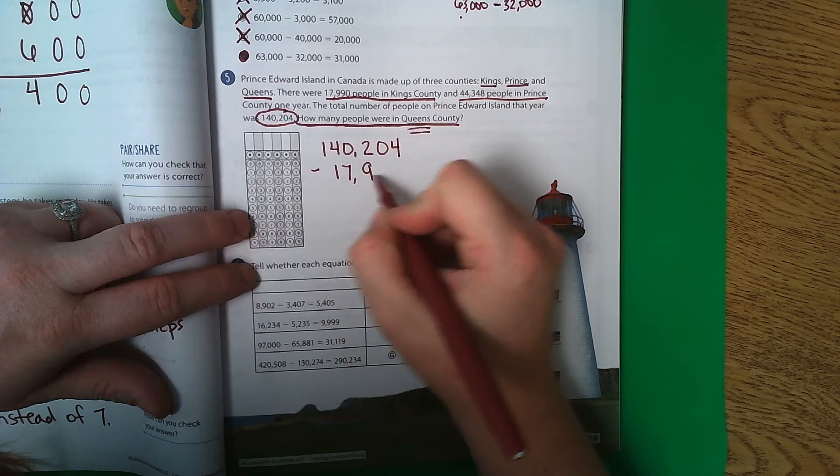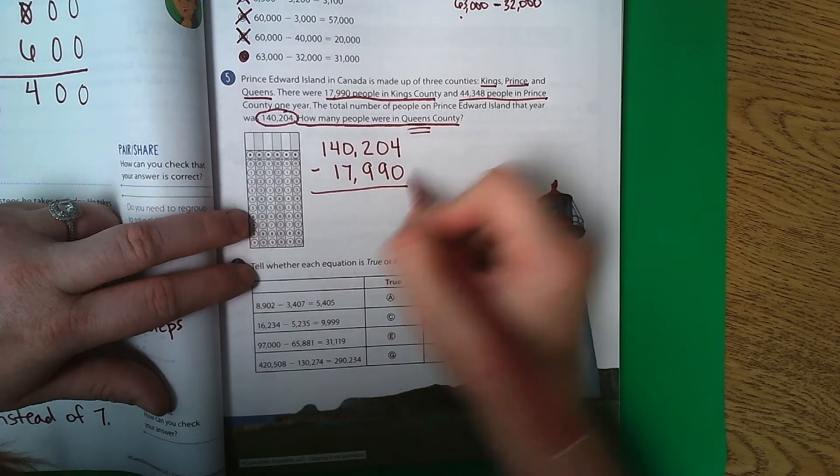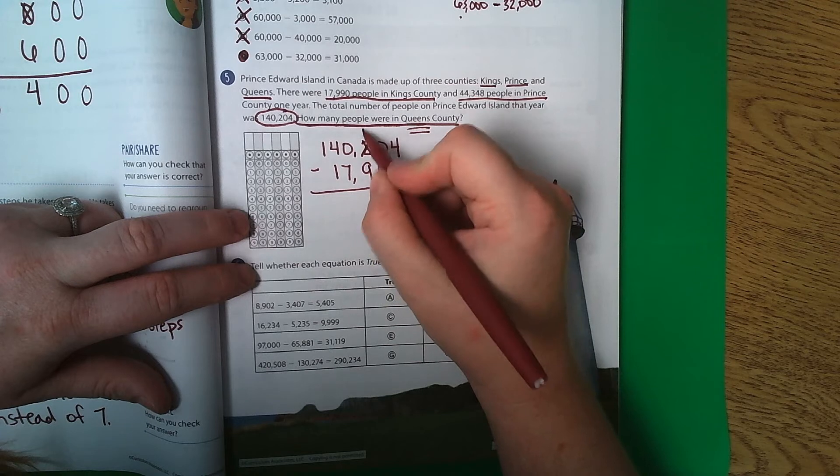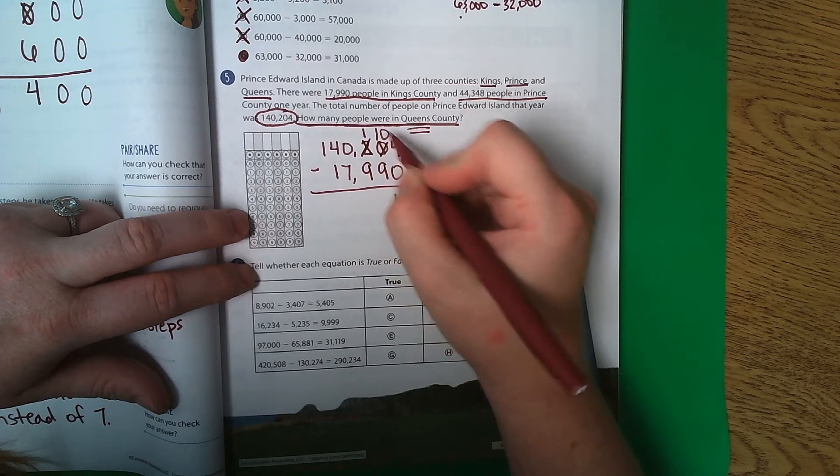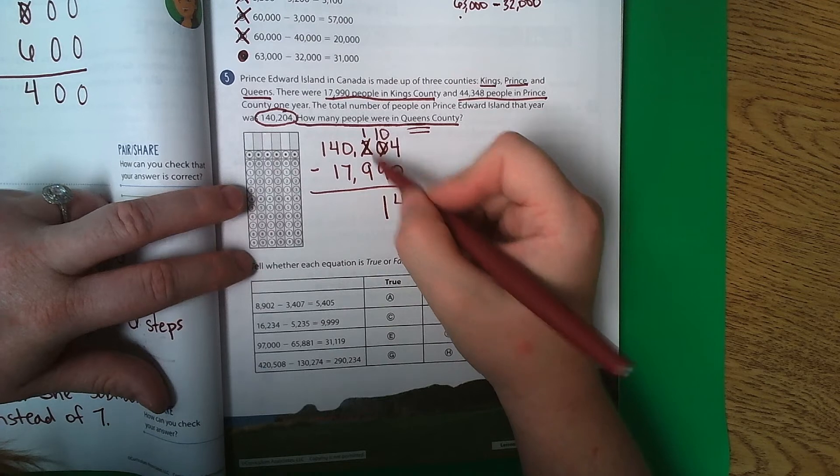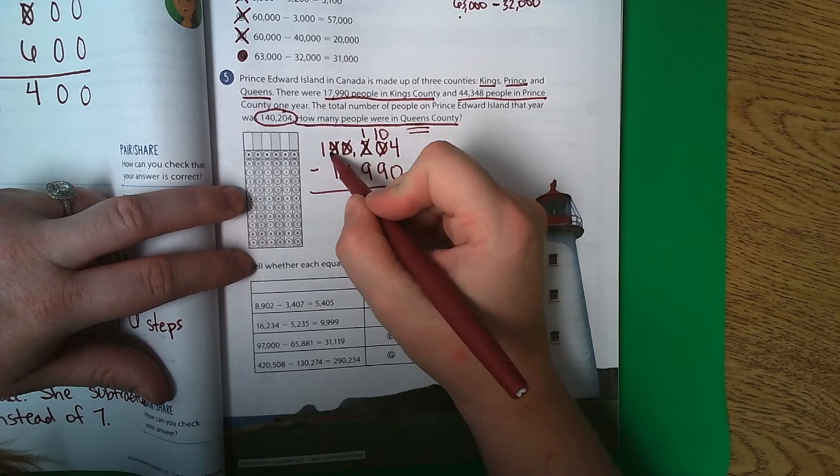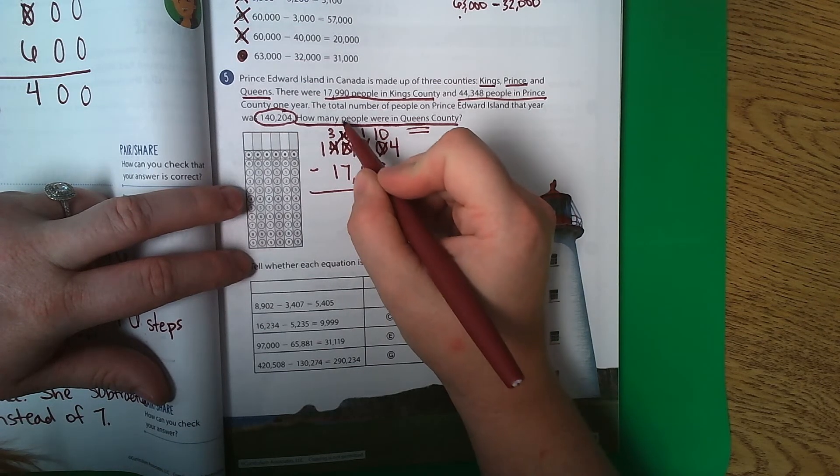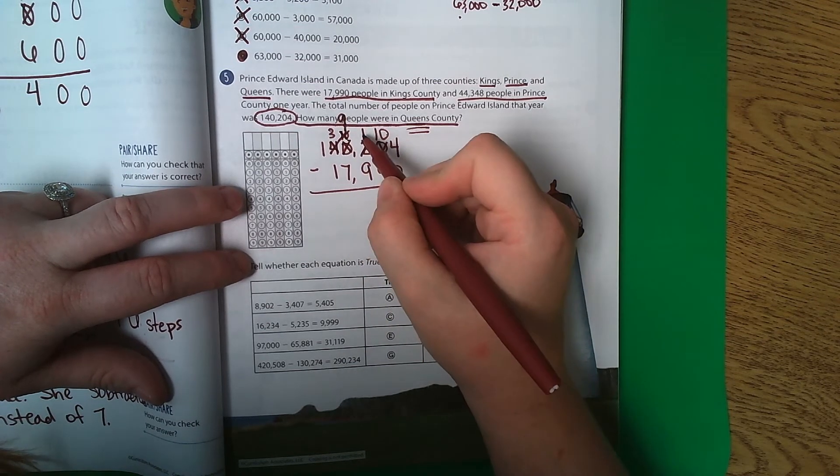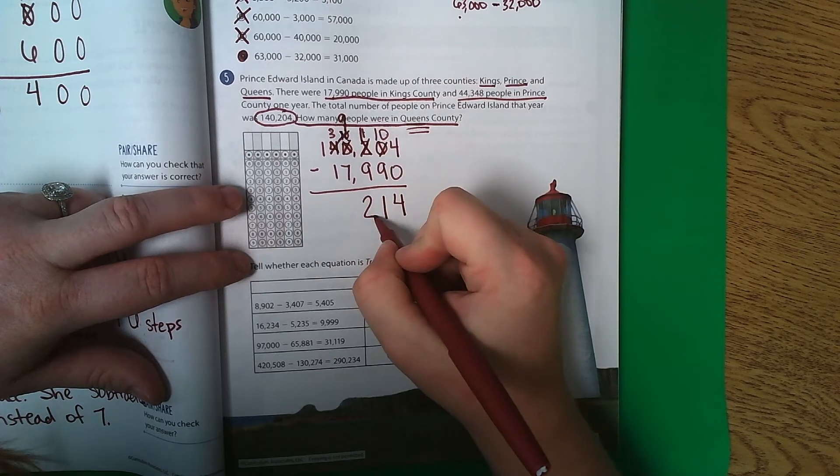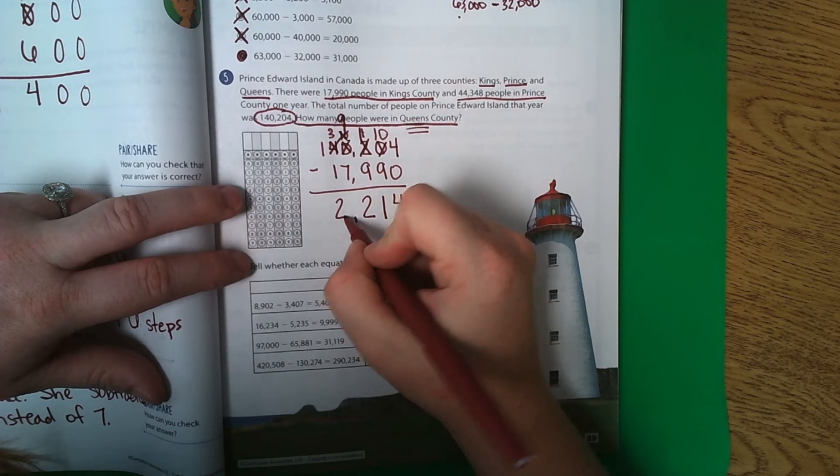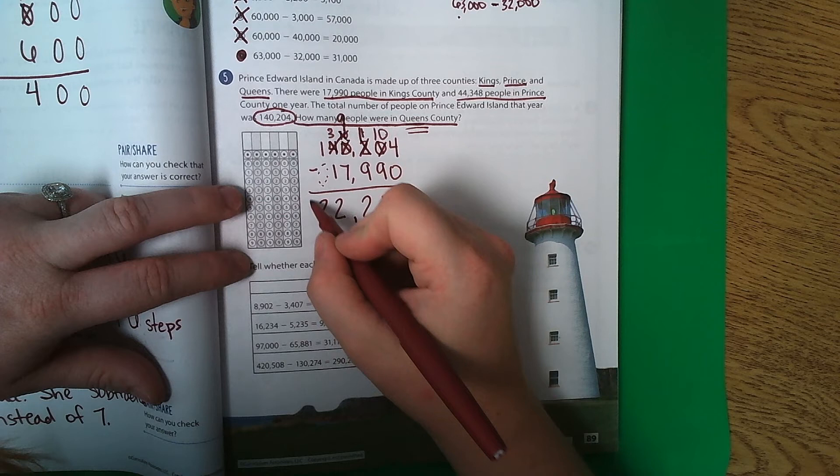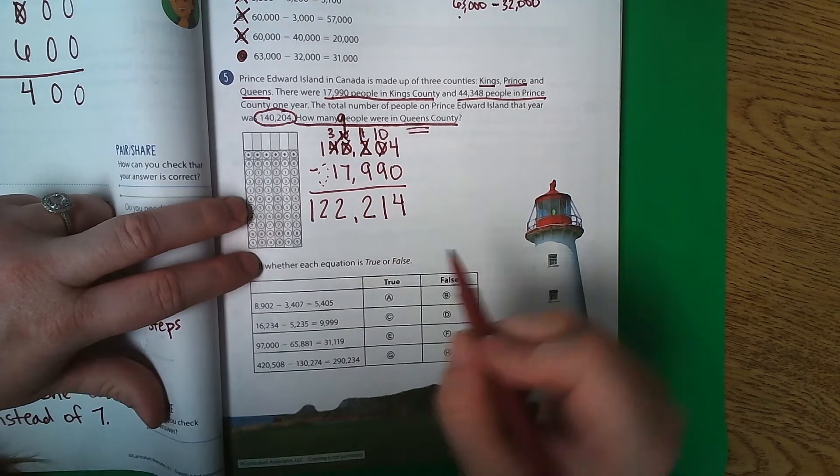4 subtract 0 is 4. 0 subtract 9, I can't do that, so I'm going to regroup. 10 subtract 9 is 1. 1 subtract 9, I can't do that, so I'm going to regroup. This becomes a 10, but that doesn't help me here. So it becomes a 9, 9, and 11. 11 subtract 9 is 2. 9 subtract 7 is 2. 3 subtract 1 is 2. And then it's like we have an invisible 0 here, and it's 1.